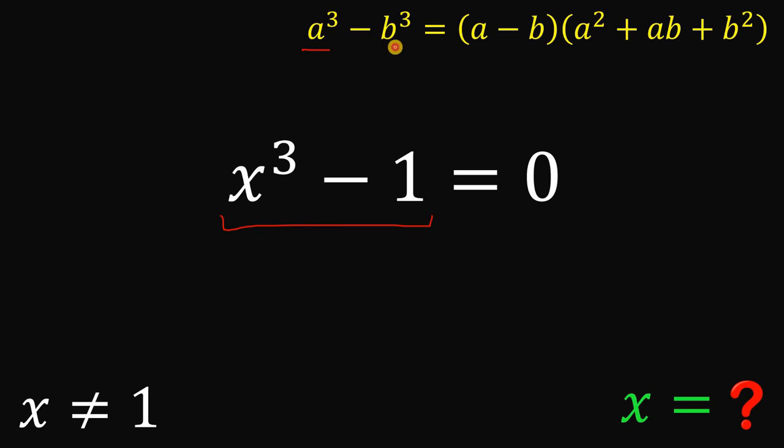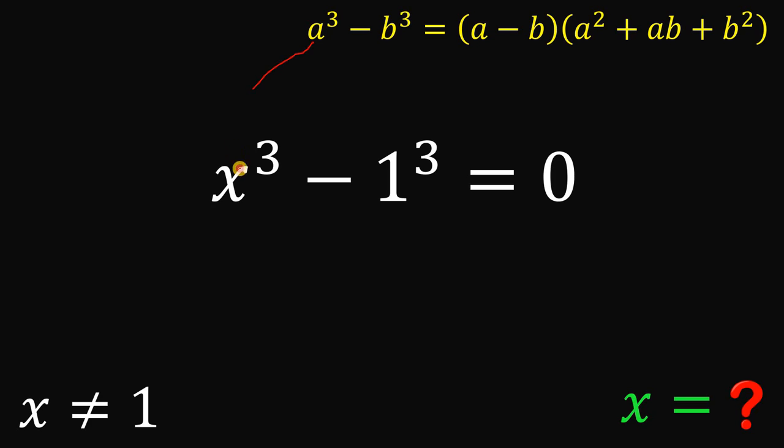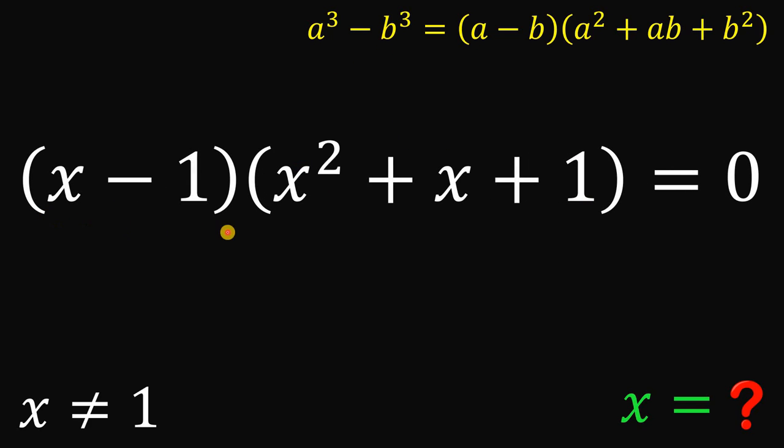If we have a cubed minus b cubed, this can be factored as a minus b multiplied by a squared plus ab plus b squared. Now this 1 is just 1 cubed. So if this a represents x and this b represents 1, so x cubed minus 1 cubed can be factored as follows: We have x minus 1 multiplied by x squared plus x plus 1.